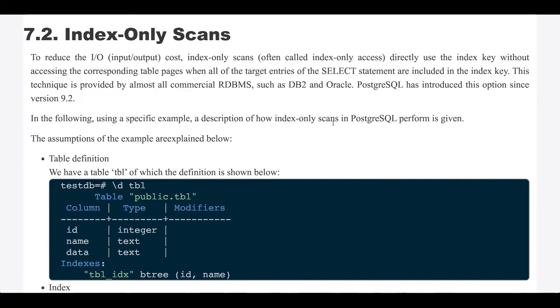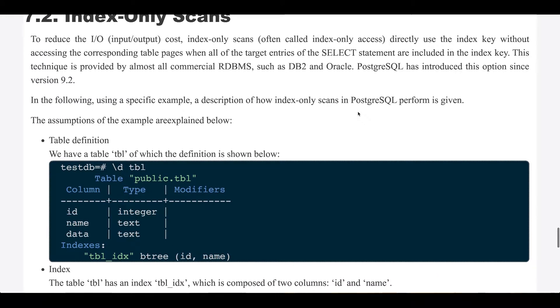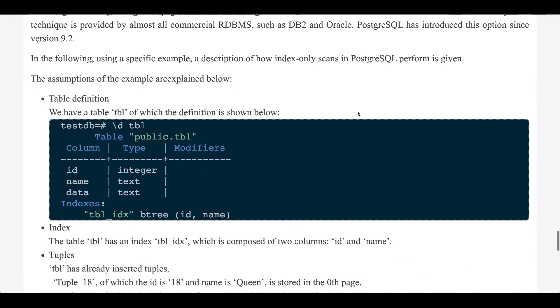Section 7.2: Index-only scans. To reduce the I/O cost, index-only scans, often called index-only access, directly use the index key without accessing the corresponding table pages when all the target entries of the select statement are included in the index key. This technique is provided by almost all commercial relational database management systems, such as DB2 and Oracle. Postgres has introduced this option since version 9.2.